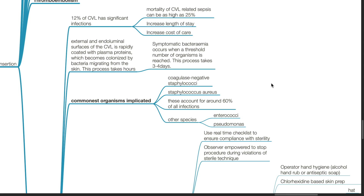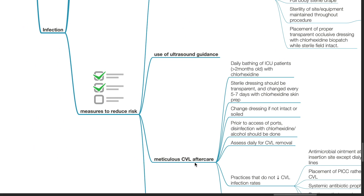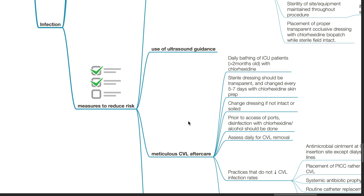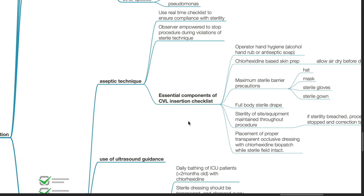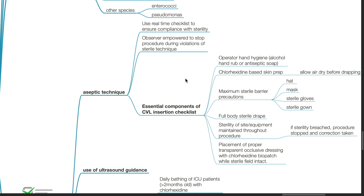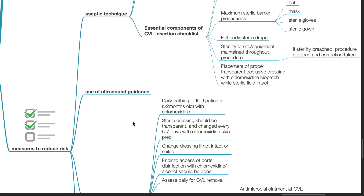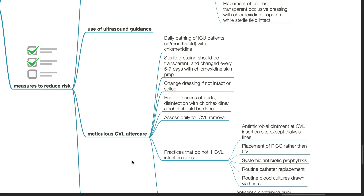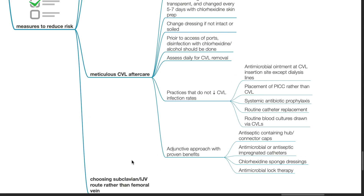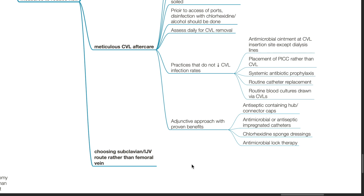The commonest organisms implicated include coagulase-negative Staphylococci and Staphylococcus aureus, which account for around 60% of all infections. Other species involved are Enterococci and Pseudomonas. Measures to reduce infection risk include aseptic technique, use of ultrasound guidance, meticulous CVL aftercare, and choosing the subclavian or internal jugular vein rather than the femoral vein.